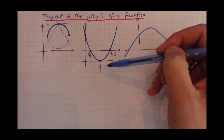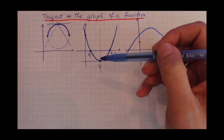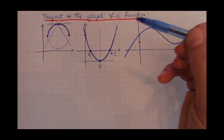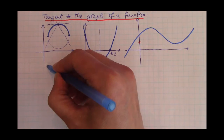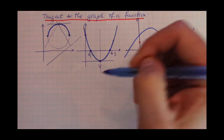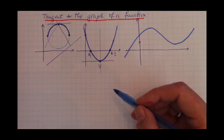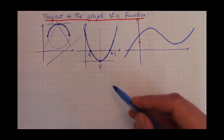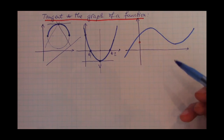So clearly we have to look for something better. For the eager student: what would the tangent be to a line? Take a minute, think about it, and see if you can come up with a nice intuitive definition for the tangent to a line.